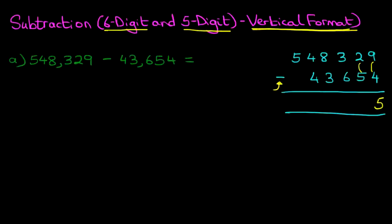How about the tens column? We've got 2 minus 5. Because 2 is smaller than 5, we're going to take 1 from the column on the left — in this case, it's the hundreds column. So let's cross out 3. 3 minus 1 is 2, and the one we have taken from here we're going to add to the tens column. The tens column has now become 12 minus 5. 12 minus 5 is 7.